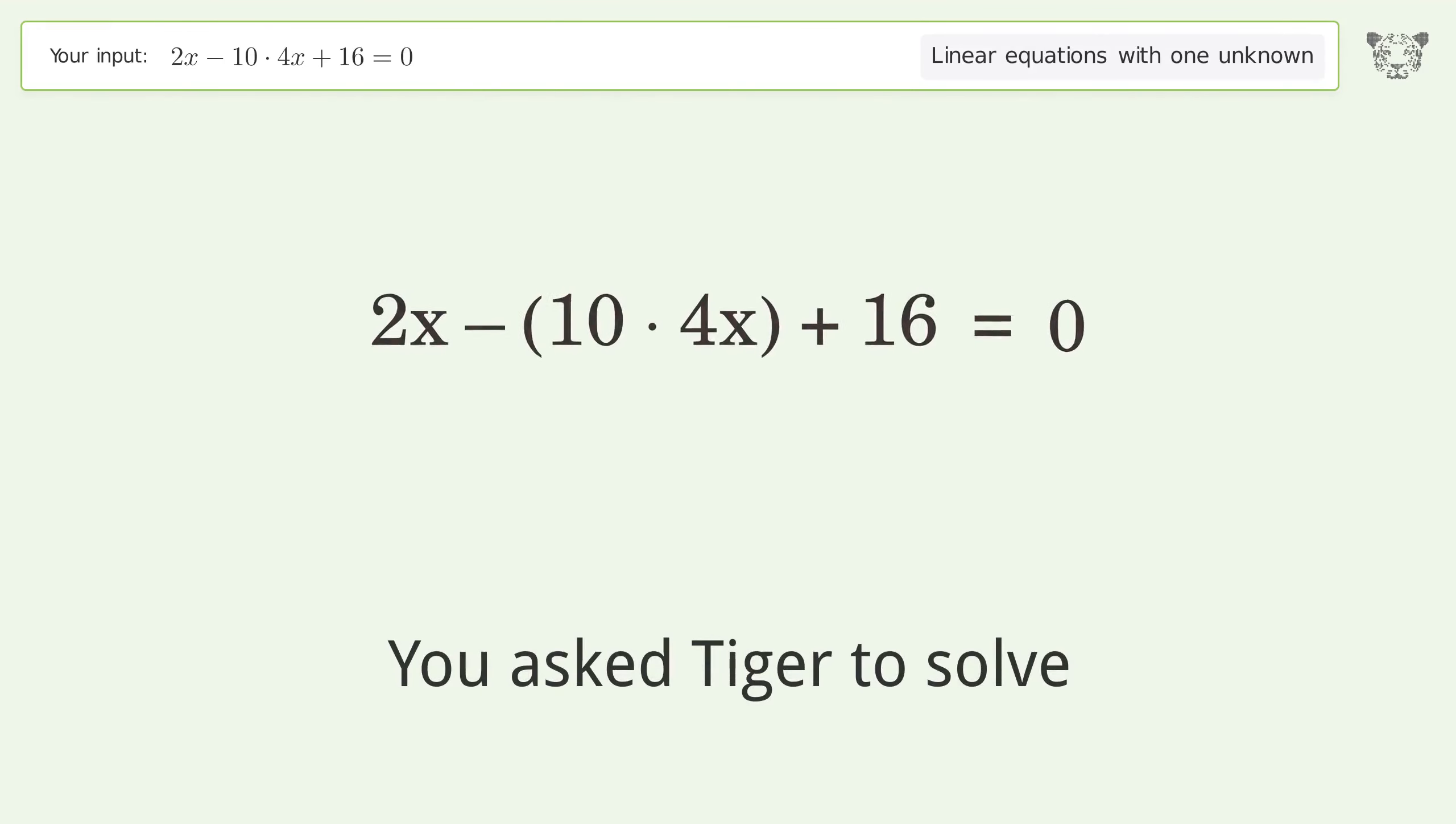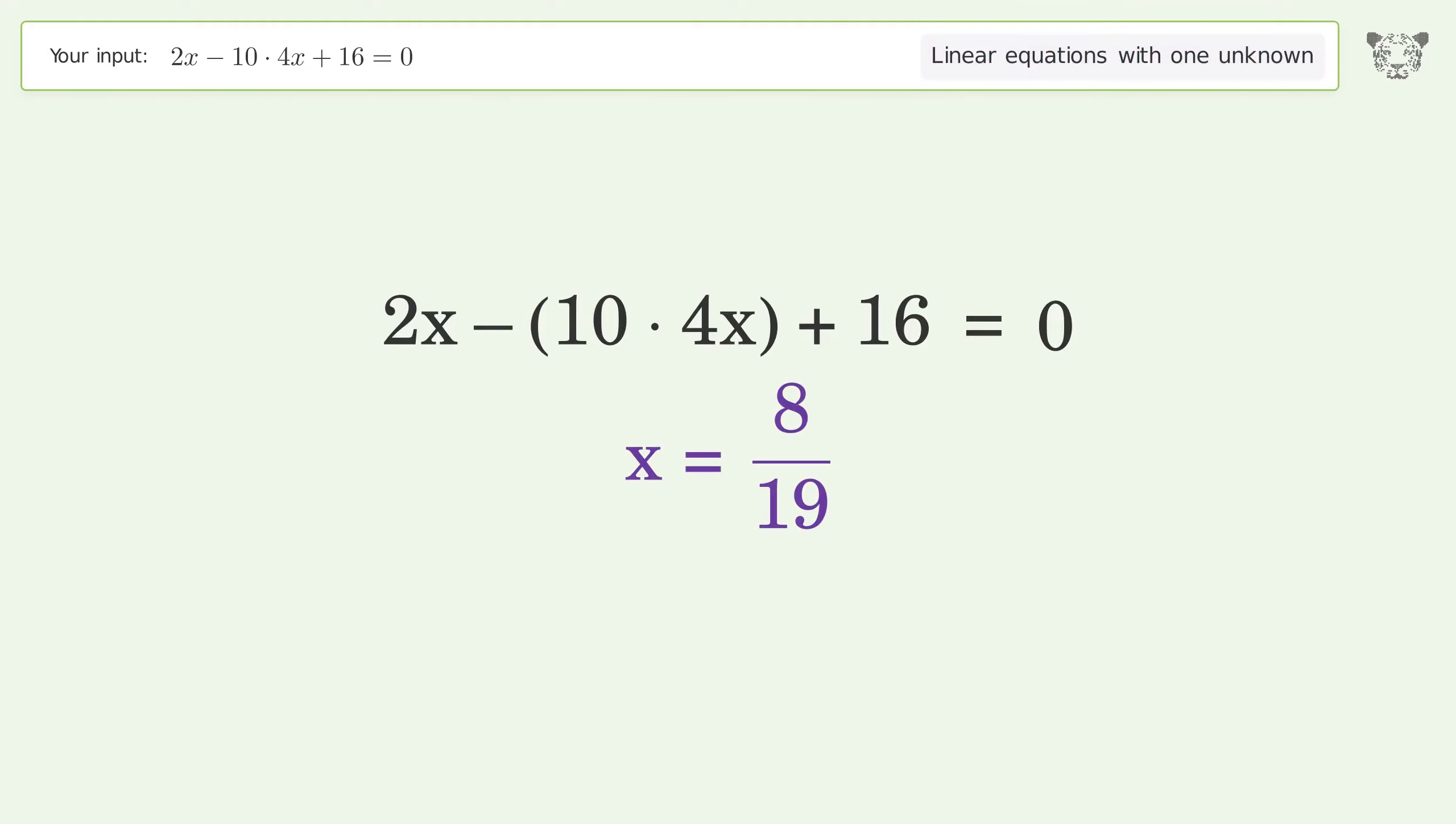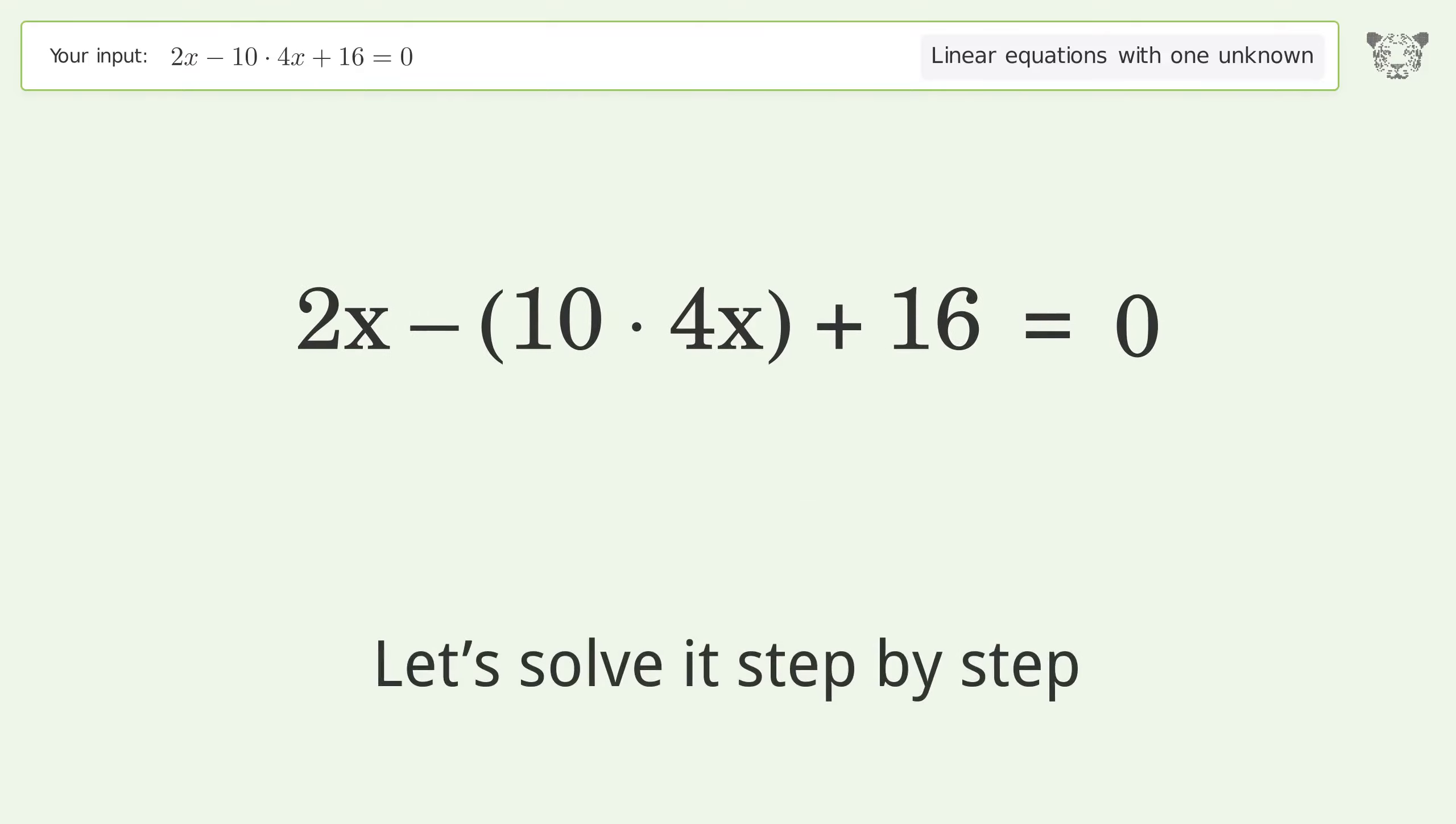You ask Tiger to solve this. This deals with linear equations with one unknown. The final result is x equals 8 over 19. Let's solve it step by step. Simplify the expression, multiply the coefficients.